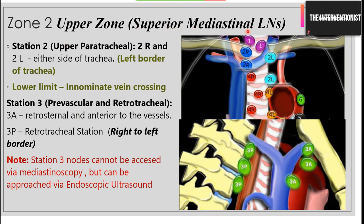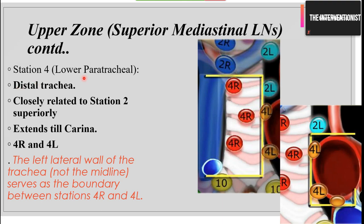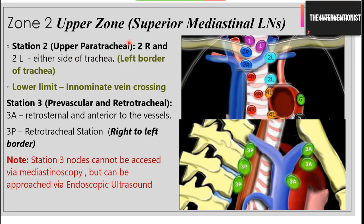Zone 2 — the upper zone or superior mediastinal lymph nodes — has three stations: stations 2, 3, and 4. Station 2 is the upper paratracheal, again divided into 2R and 2L. Here, the division is not the midline of the trachea — it is the left margin of the trachea. Remember that when reporting: if the lymph node is lateral to the left margin of the trachea, it is labeled 2L. When it is to the right — even if crossing the anterior margin of the trachea but still right of the left margin — it is labeled 2R.